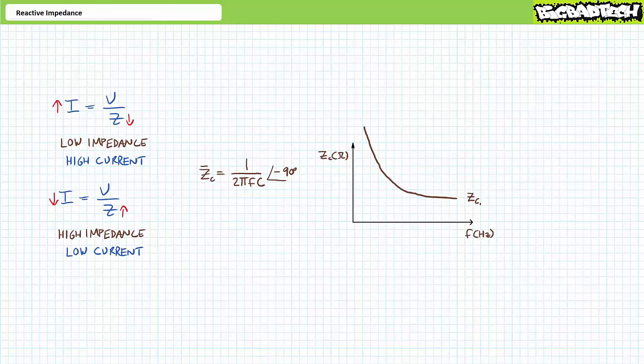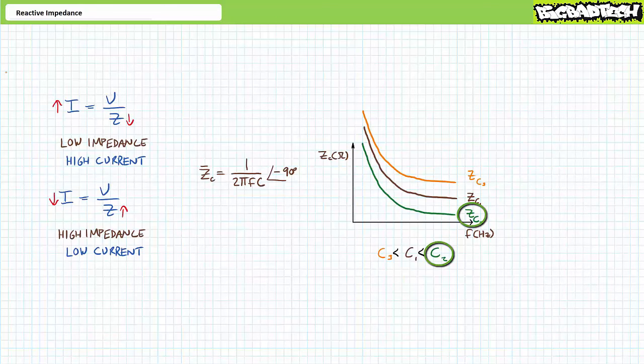Now that we've gotten an understanding of how frequency affects impedance, let's discuss how capacitance component magnitude influences impedance. Capacitance is in the denominator of the capacitive complex impedance formula. Given constant frequency, high capacitive elements present low impedance, whereas low capacitive elements present high impedance. This is a reflection of capacitor construction: large capacitors are physically larger and have a lot of room for charge, so they draw a large amount of current — synonymous with a low impedance element. Conversely, smaller capacitors don't have a lot of room for charge, so they draw less current, synonymous with high impedance elements.